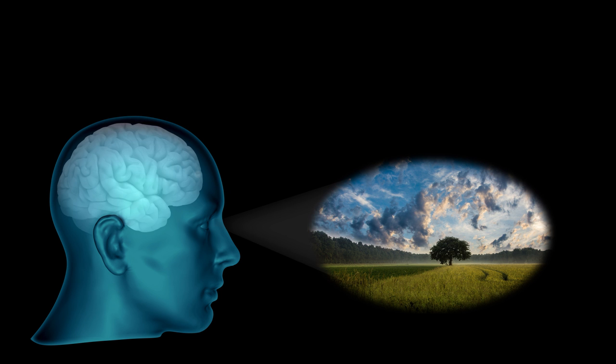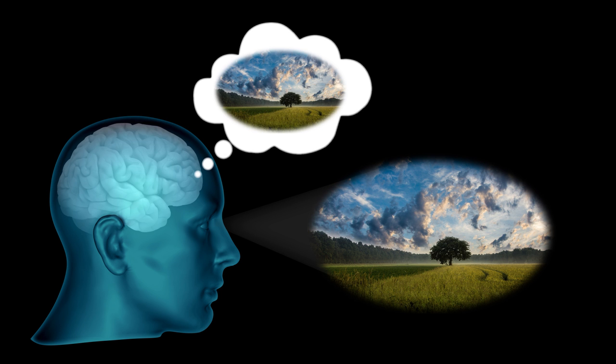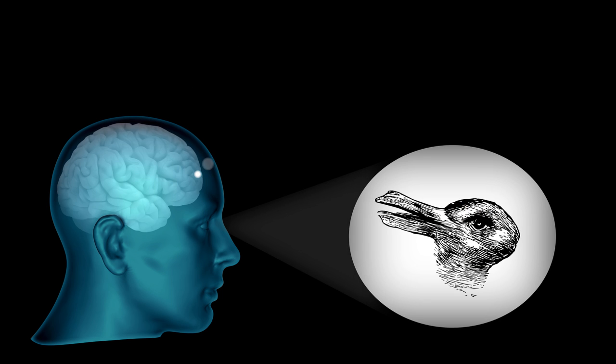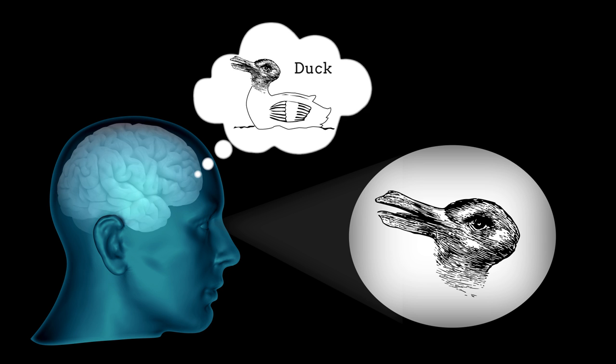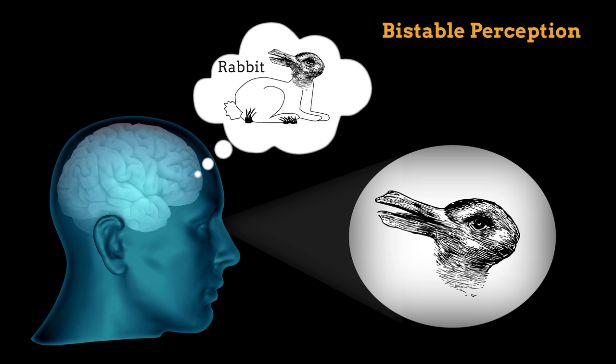Most images can only be perceived in a single way. However, some images can be perceived in multiple ways, requiring the brain to choose from among the possible interpretations. This phenomenon is called bistable perception.